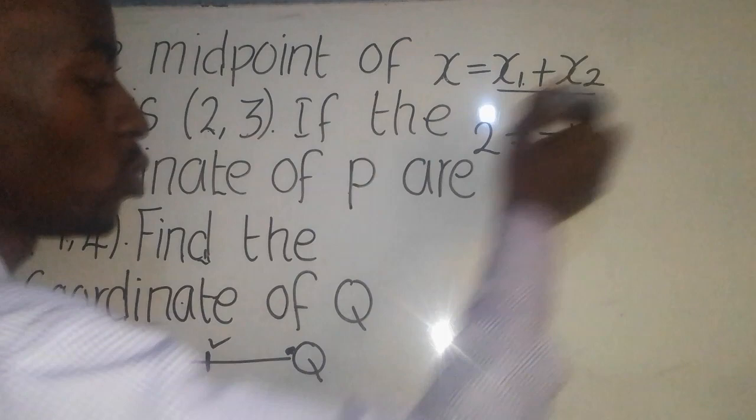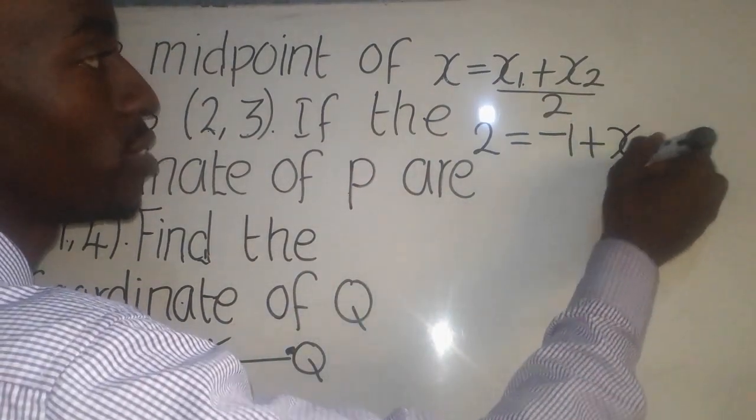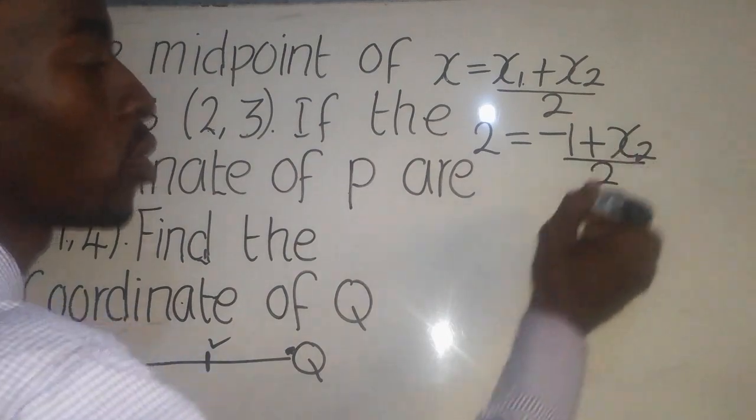So how about X2, which is here? We don't know. So we just leave it as this, over 2.